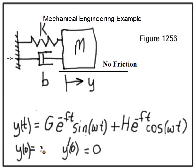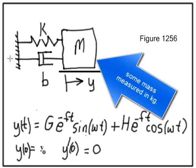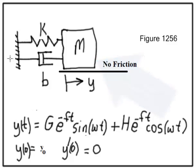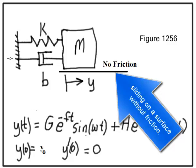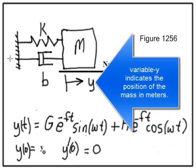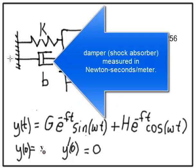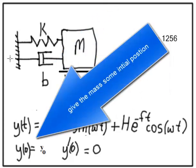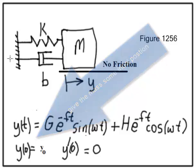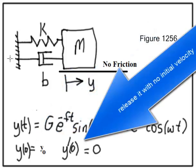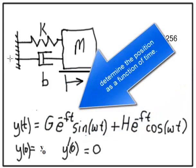Here's the mechanical engineering example. There's a mass measured in kilograms sliding on a surface without friction. Variable y indicates the position of the mass in meters, a spring with spring constant in newtons per meter, and a damper or shock absorber measured in newton seconds per meter. Give the mass some initial position y-zero, release it with no initial velocity, and determine the position of the mass as a function of time.